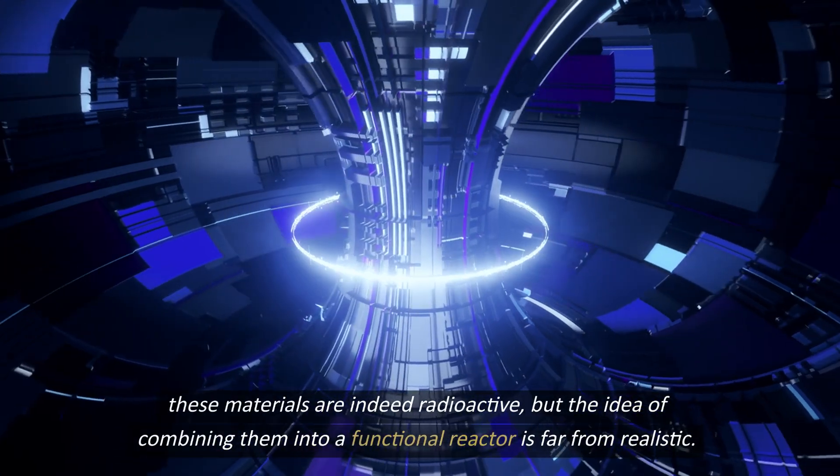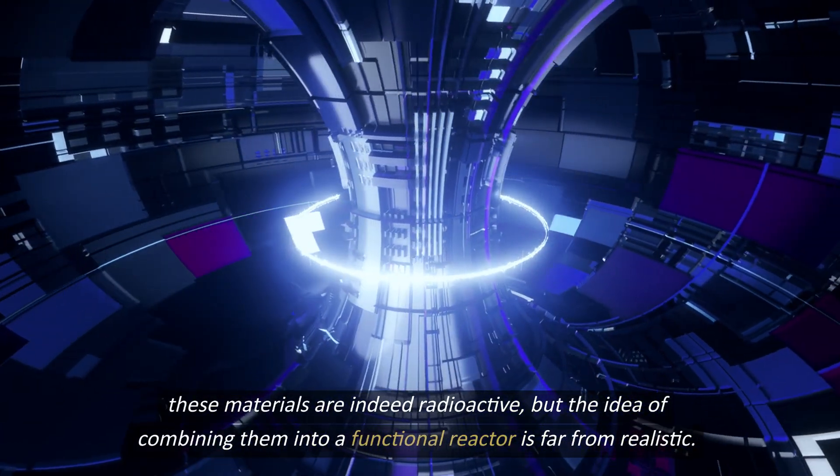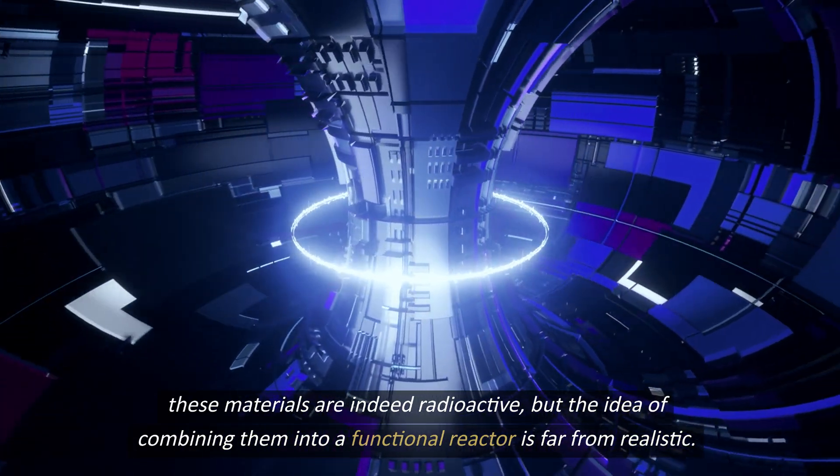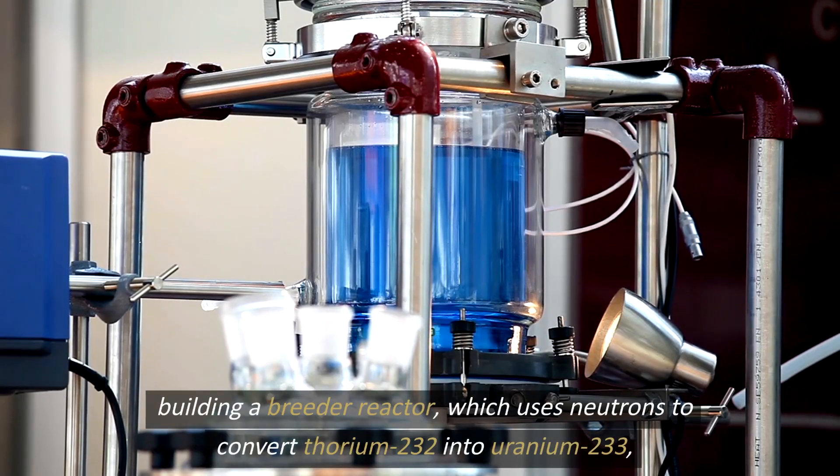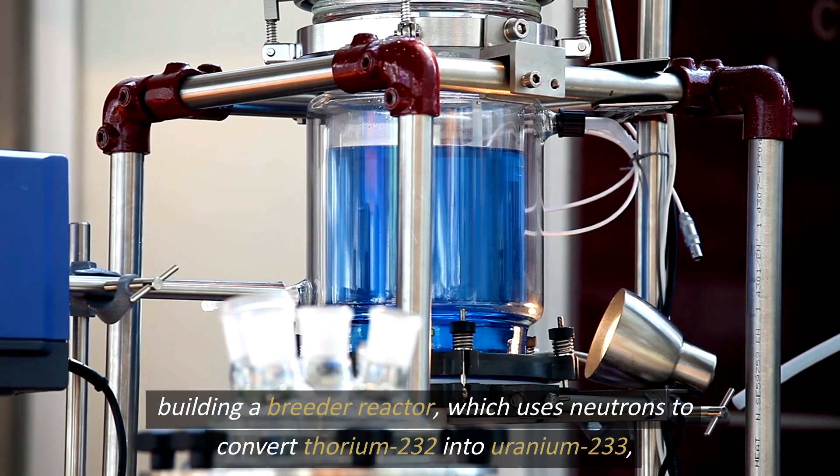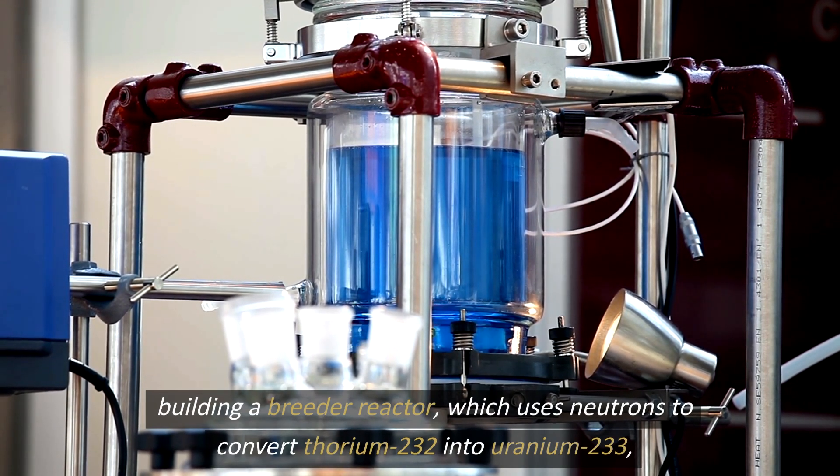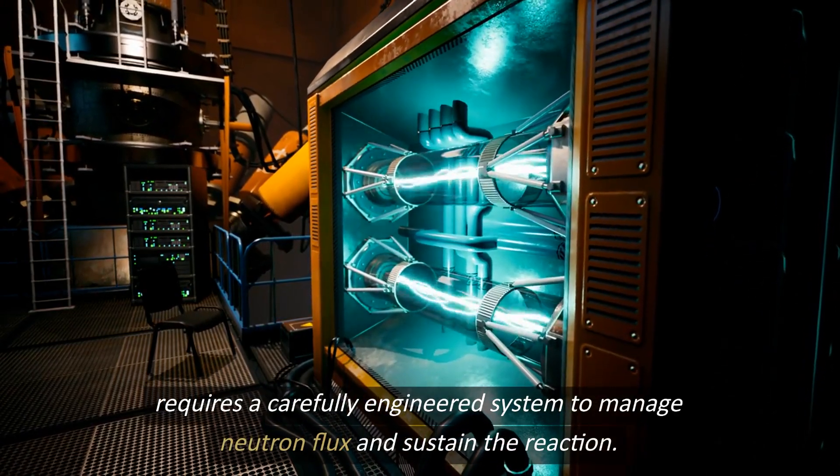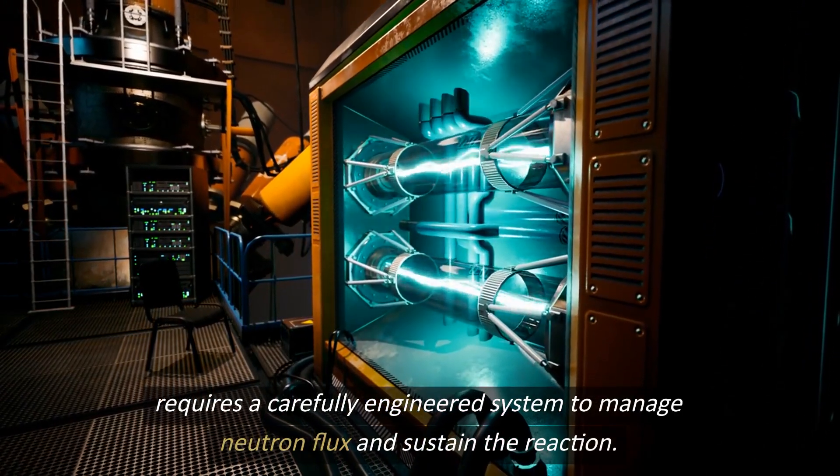These materials are indeed radioactive, but the idea of combining them into a functional reactor is far from realistic. Building a breeder reactor, which uses neutrons to convert thorium-232 into uranium-233, requires a carefully engineered system to manage neutron flux and sustain the reaction.